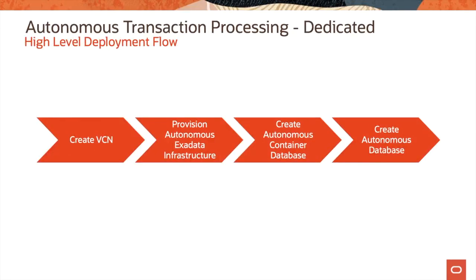Here is a quick look at the high-level deployment flow for autonomous transaction processing dedicated — the same applies to autonomous data warehouse dedicated as well. The first step is to create a virtual cloud network, then provision autonomous Exadata infrastructure. Once that is done, you create the autonomous container database, and finally you create your autonomous database.